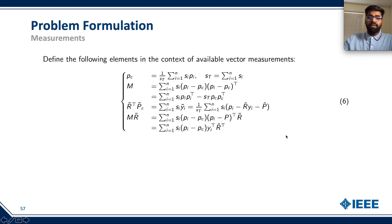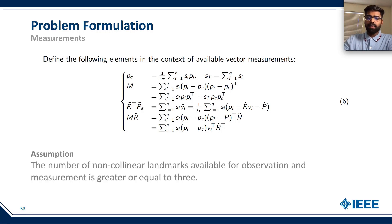We define the following elements in context of the available vector measurements. And it is very important to know that the number of non-collinear landmarks available for this observation and measurement is greater than or equal to 3.